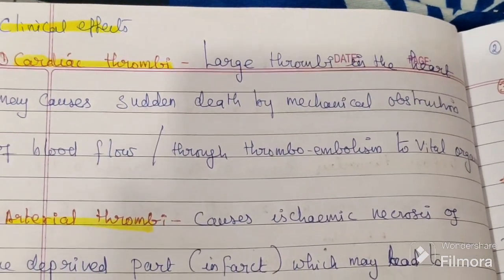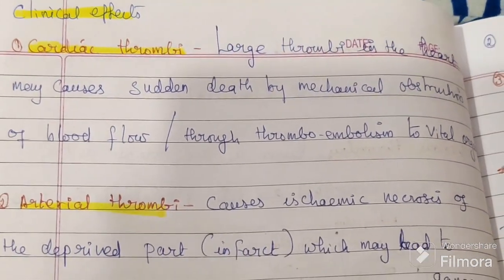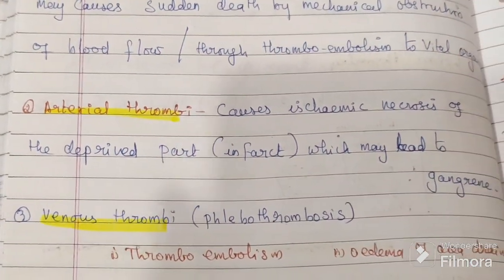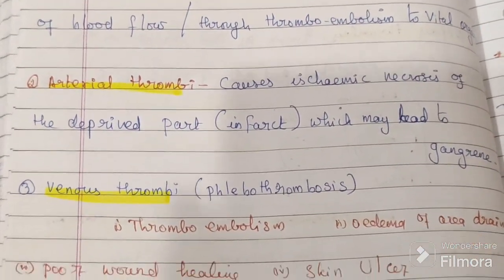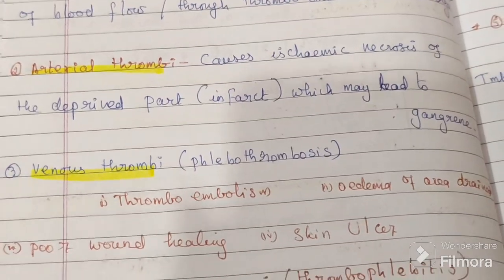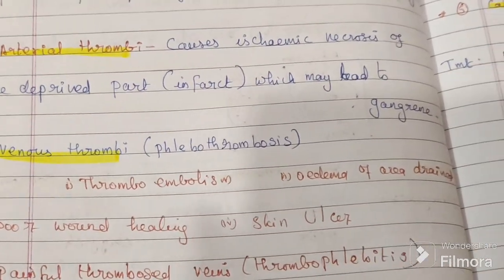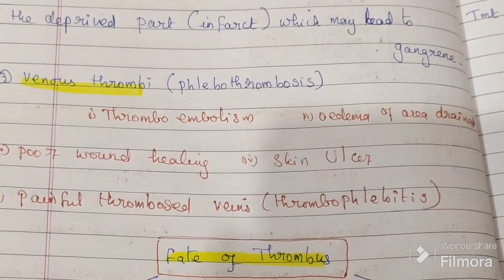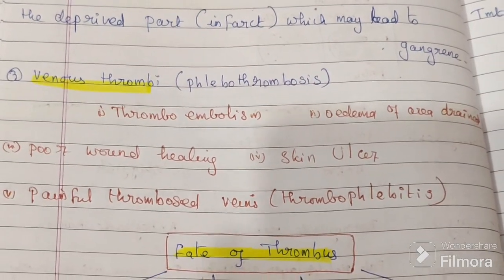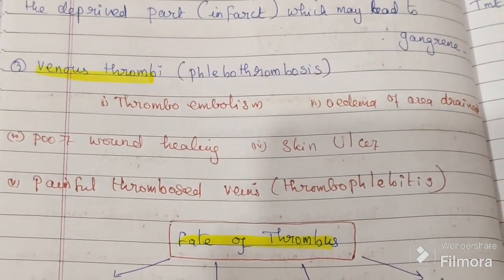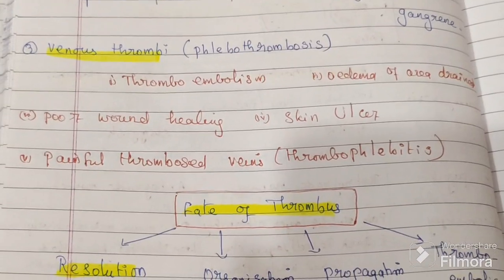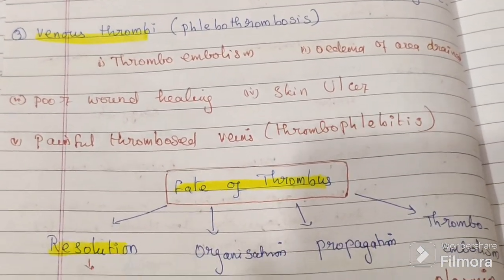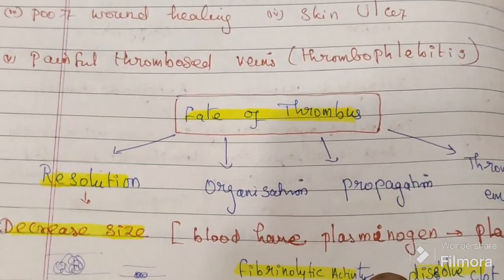Occlusion is incomplete in arterial thrombus and complete in venous thrombus. Complications: arterial thrombus causes ischemia and infarction; venous thrombus causes edema and ulceration. Clinical effects of cardiac thrombus: it causes sudden death due to mechanical obstruction of blood flow. Arterial thrombus causes ischemia and necrosis, leading to infarction and potentially gangrene. Venous thrombus causes thromboembolism, edema, poor wound healing, skin ulcers, and painful thrombosed veins.